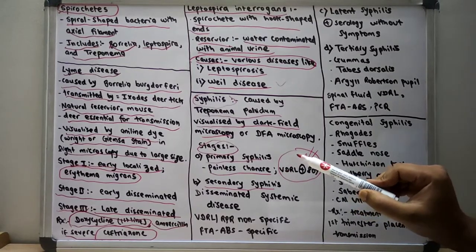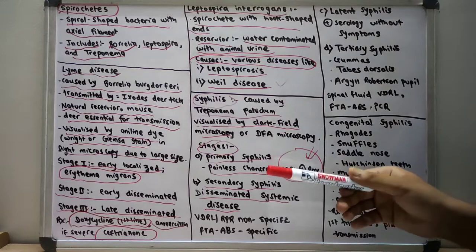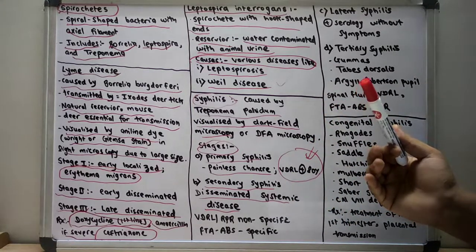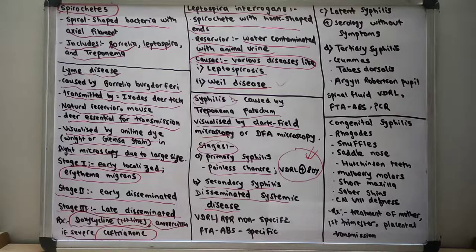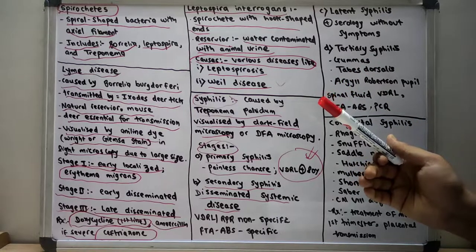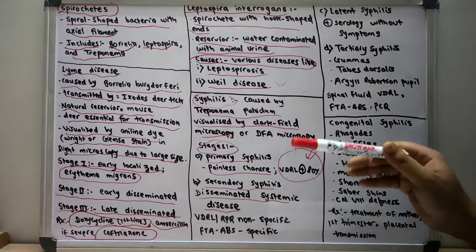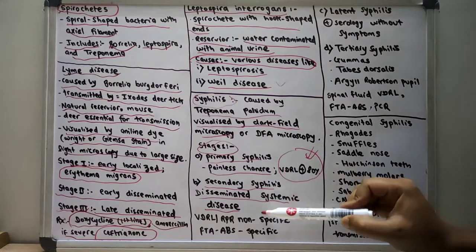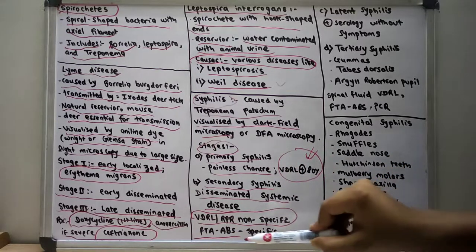In secondary syphilis there is disseminated systemic disease. There is a constitutional symptom of maculopapular rash, also present on the palms and soles. There is also presence of condyloma lata — smooth, painless, wart-like lesions on the genitals — which is a specific feature of secondary syphilis. Lymphadenopathy and patchy hair loss are also present. Secondary syphilis can be confirmed by dark field microscopy. VDRL and RPR tests are non-specific, but the fluorescent treponemal antibody test is very specific.